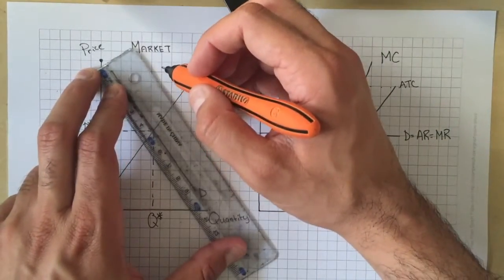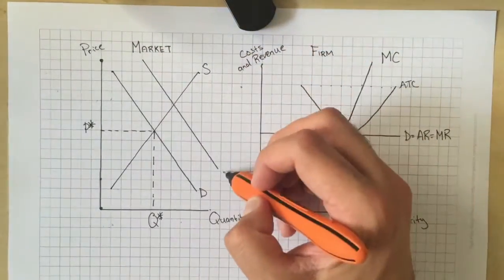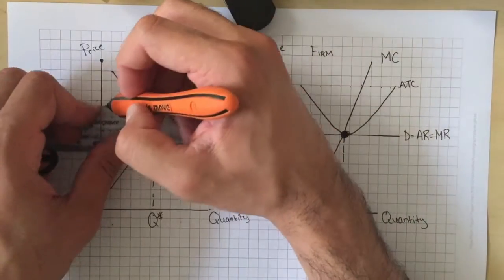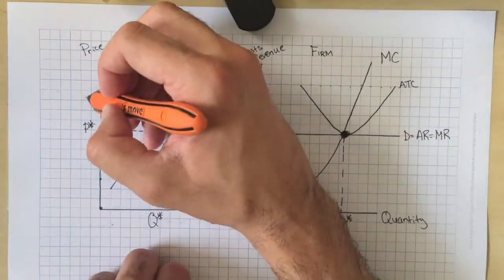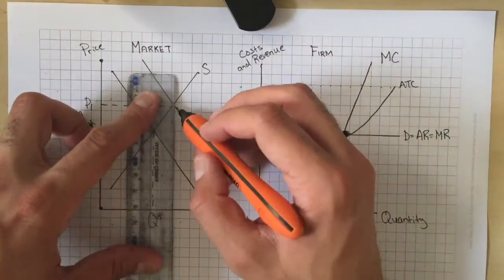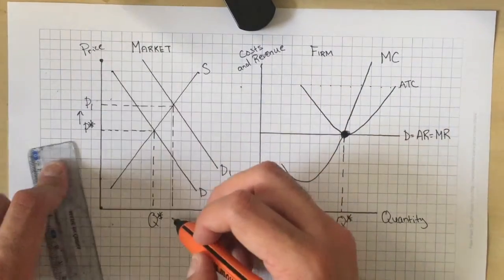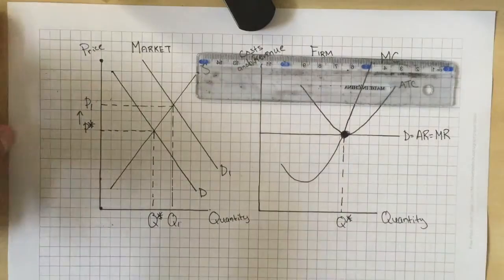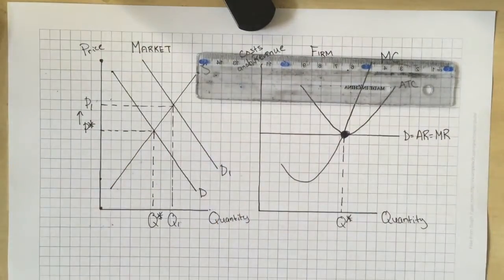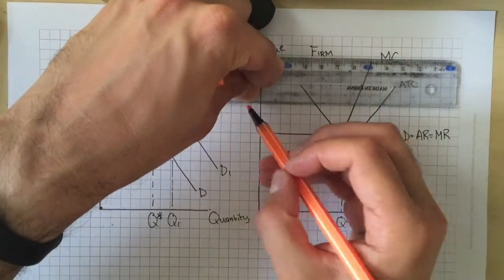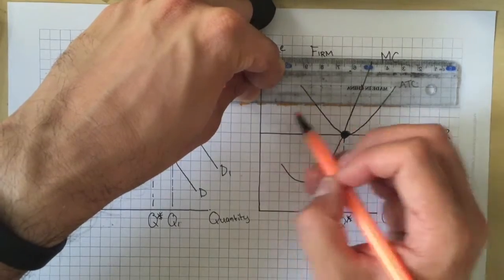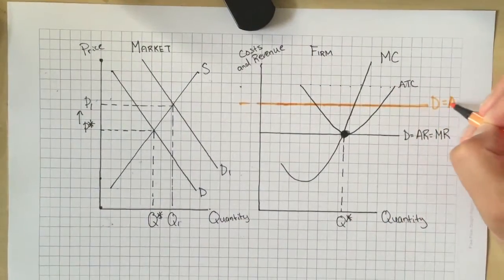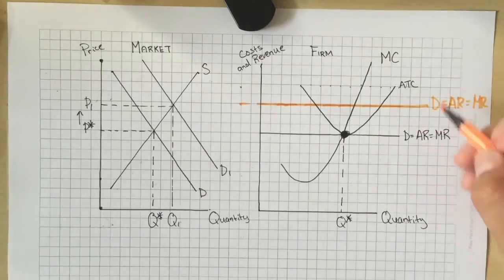Now let's say demand increases in the market for some reason — demand rises. We know that's going to drive up the price in the market and also increase equilibrium output, which we'll show on the left diagram. This drives up the price the firm can get, shown here in orange. I'll label this new curve D1, or average revenue 1, or marginal revenue 1.